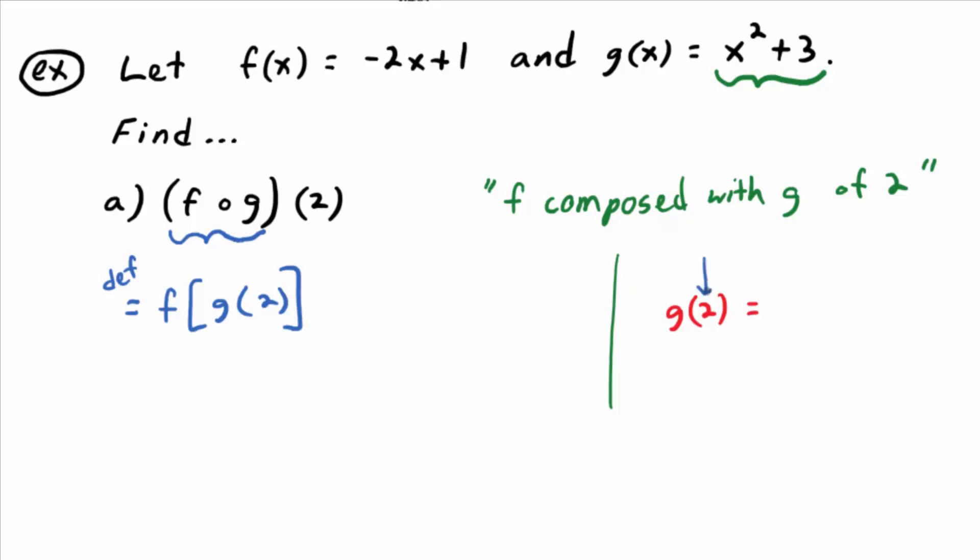An x squared plus 3, wherever you see that x, plug in a 2 instead. So it becomes 2 squared plus 3, which is what you said, 7. 4 plus 3 is 7.